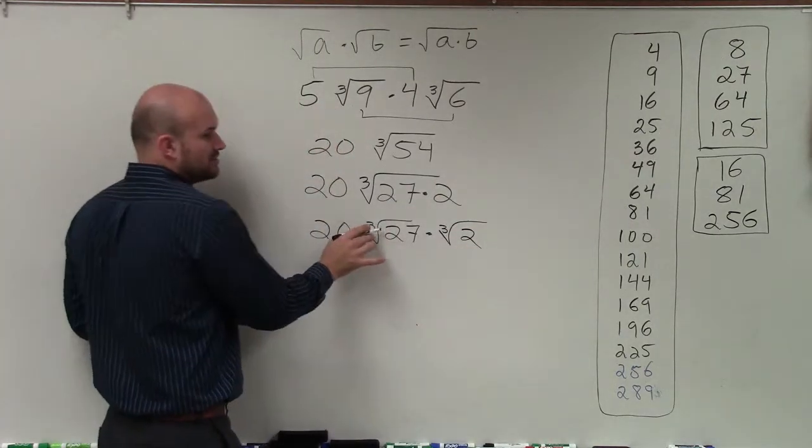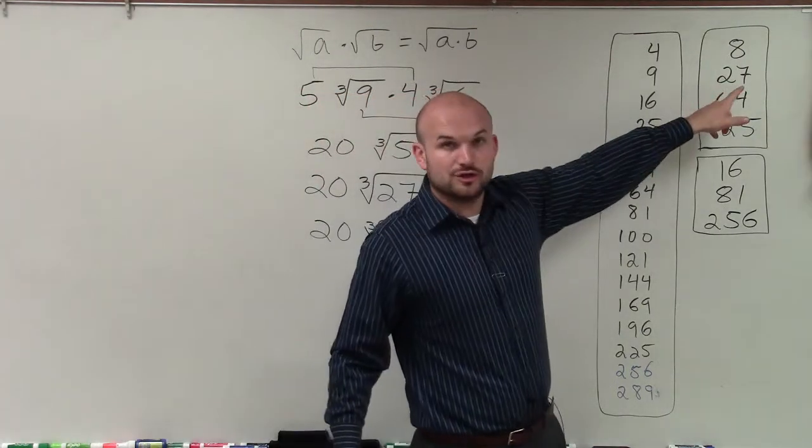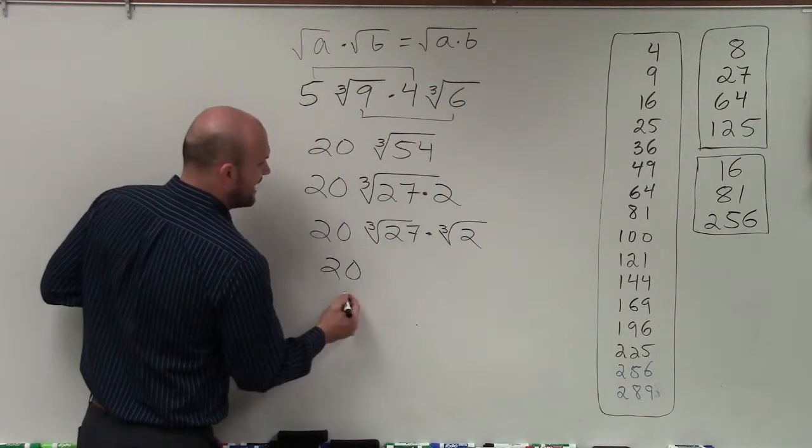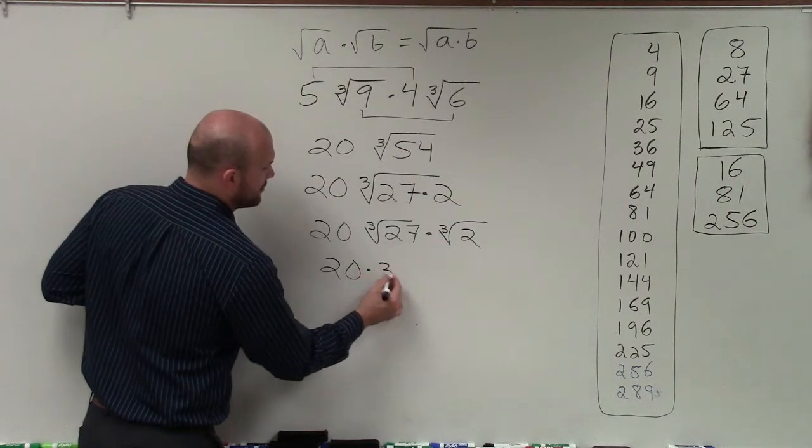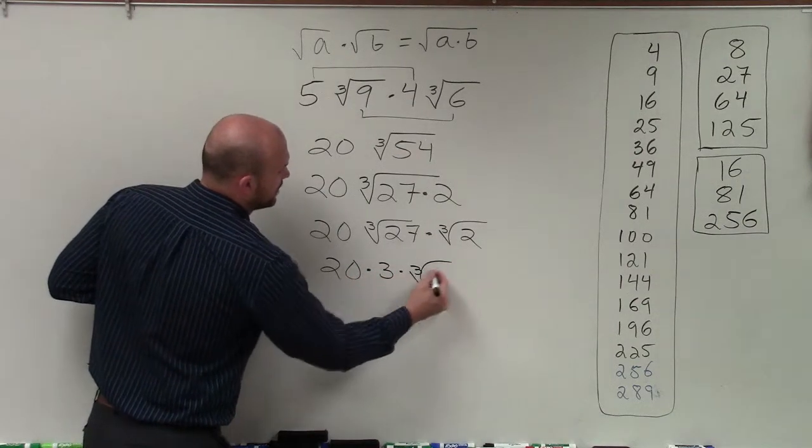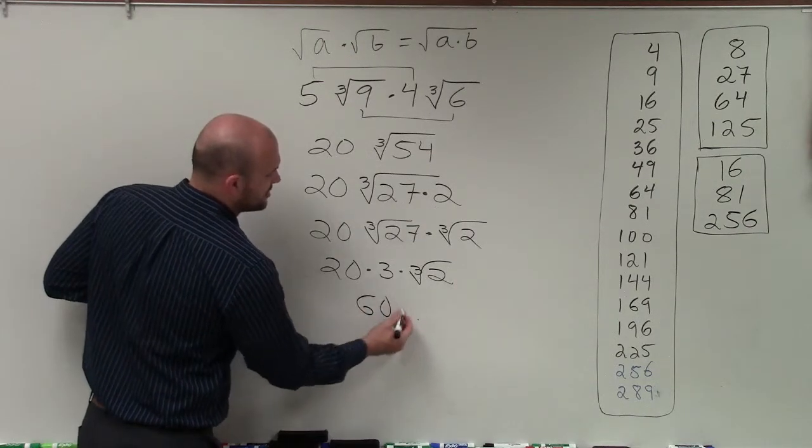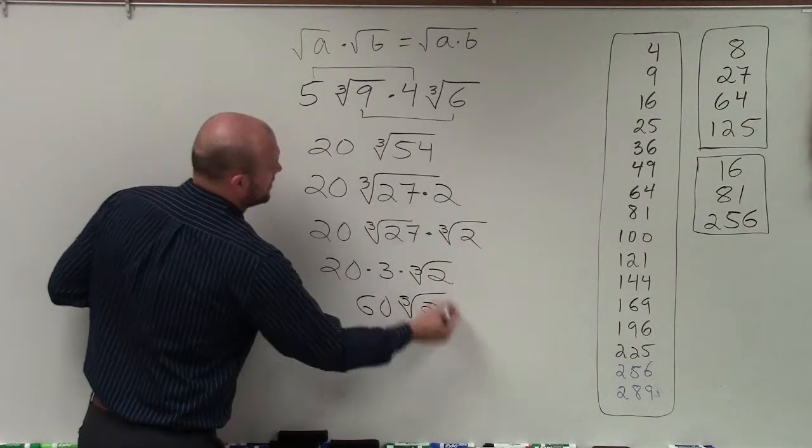Now, I know the cube root of 27 because that is a perfect cube number, which would be just the number 3. So 20 times the cube root of 27, which is 3, times the cube root of 2. Well, 20 times 3 is 60 times the cube root of 2.